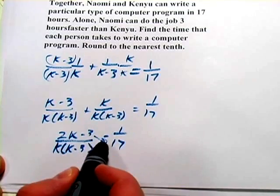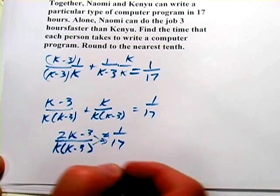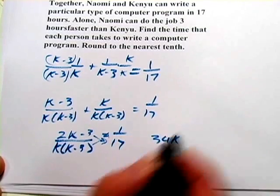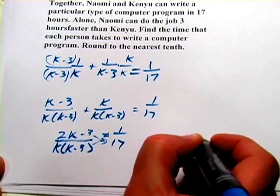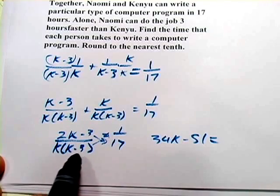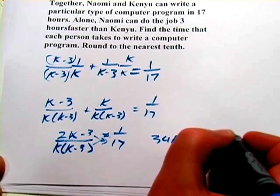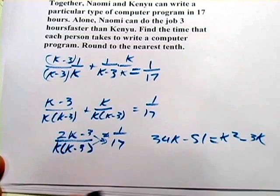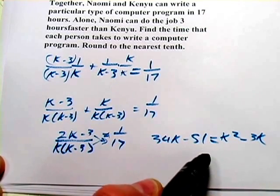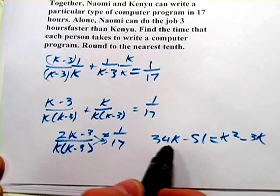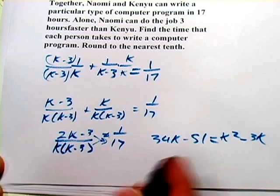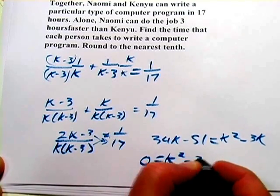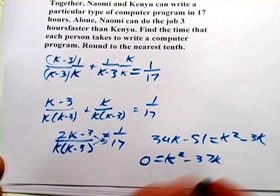Now from here, I guess I'd probably go ahead and cross multiply and I would get 17 times two, so that's 34 K, 17 times negative three minus 51 equals here. We'll go ahead and do the multiplication through. K times K is K squared, and K times minus three is negative three K. And it looks like we're going to have a quadratic here because we've got a K squared term. So let's get everything on one side, set it equal to zero. If we do that, I think we get negative 37 K and a plus 51.